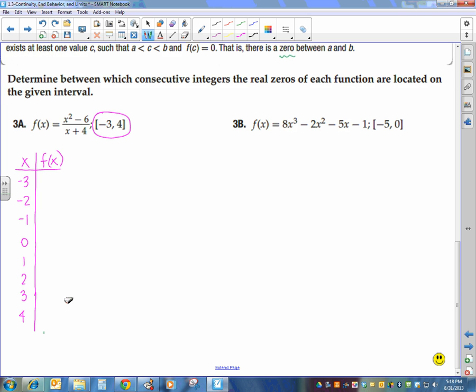Now pause, go plug them in, put the values into your table, do what you need to do, and then start back up and we will determine what we have. So, you should have when you plugged them in, negative 3 gave you a positive number. I'm not so interested in the number, I just want to know if it's positive or negative. Negative 2 gave me a negative number. Negative 1 was negative, 0 was negative, 1 was negative, 2 was negative, 3 was positive, and 4 was positive.